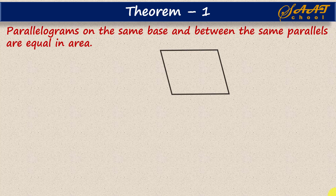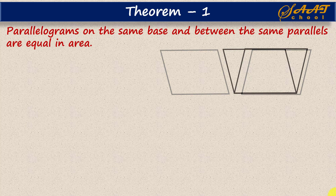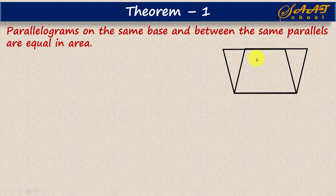Let's suppose we have one parallelogram and another parallelogram. You can see they are not standing on the same base and they are not between the same parallels. Now suppose two parallelograms are standing on the same base — this base is common for them — and they are between these two parallel lines. Since both are parallelograms, opposite sides are parallel. So they are on the same base and between the same parallels, and we have to show their areas are equal.